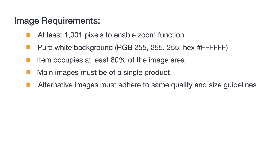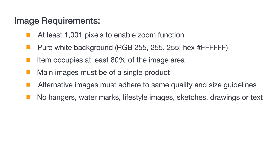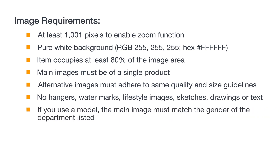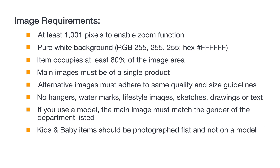Alternate images can be different angles, views, or swatches, but must adhere to the same quality and size guidelines. Women's and men's clothing must be photographed on a model or flat — that means no hangers, watermarks, lifestyle images, sketches, drawings, or text. If you do decide to use a model, the main image must match the gender of the department listed for that product. All kids and baby items should be photographed flat and not on a model. Product images should only depict what the customer will receive, and accessories that aren't part of the product should not be shown.